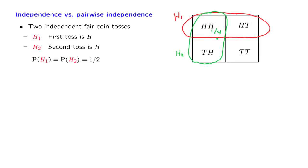We have probability 1/4 for the heads-heads outcome. The total probability of event h1 is 1/2, which means the probability of heads-tails should be 1/4. By the same argument, the probability of tails-heads is 1/4. We have a total of 3/4, so what's left — the probability of tails-tails — is 1/4.